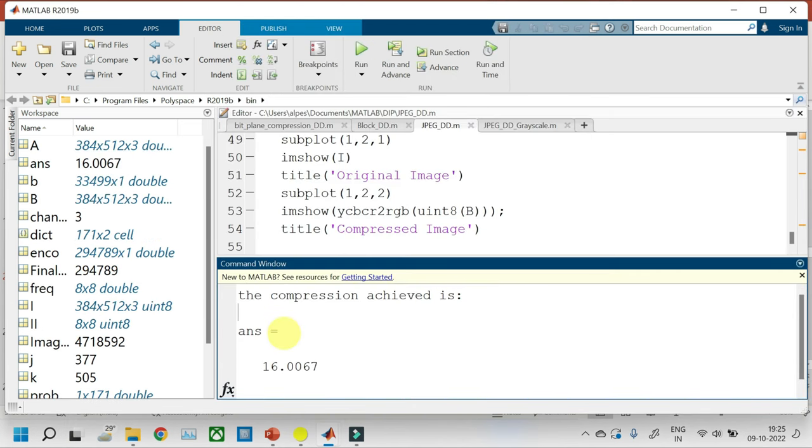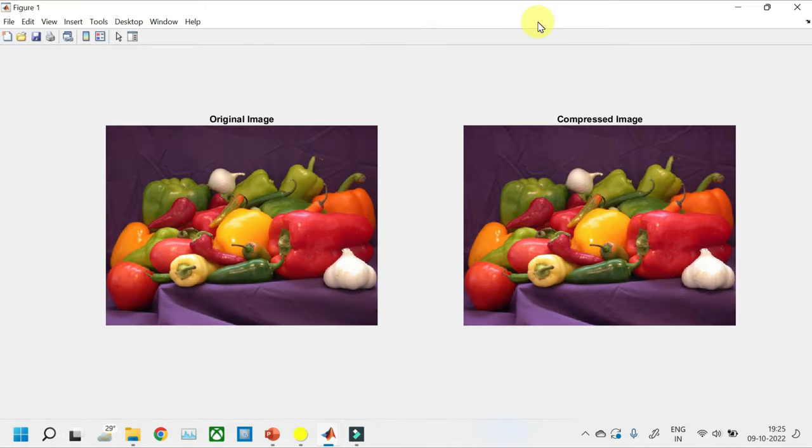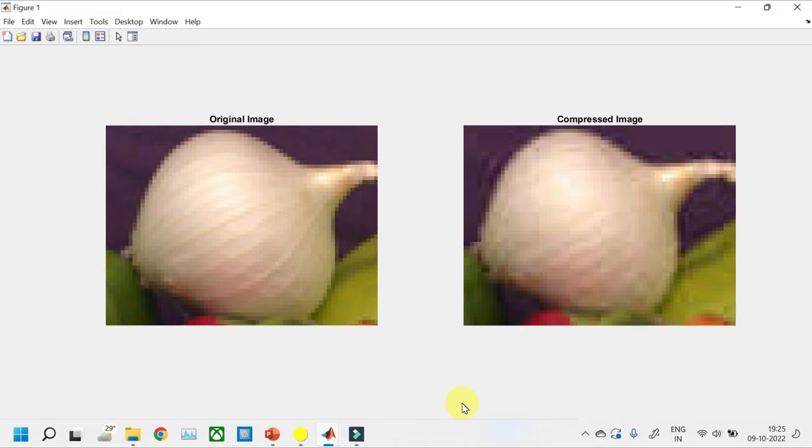So the compression that is achieved is 16 times and you can see that even after 16 times compression the compressed image is almost identical to the original image. But when we zoom say this particular spice in both the images you can see here that the pixels are individually visible and the edges which are visible here are not visible here.